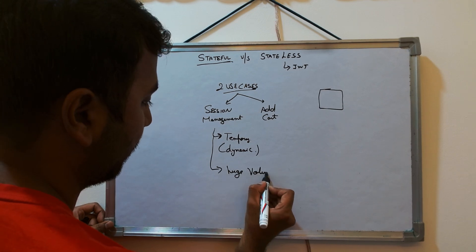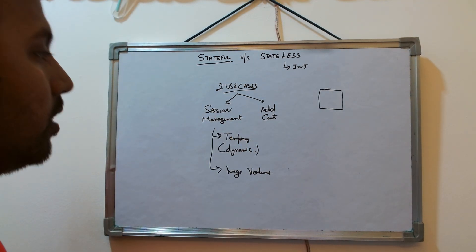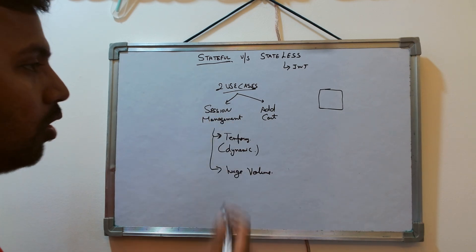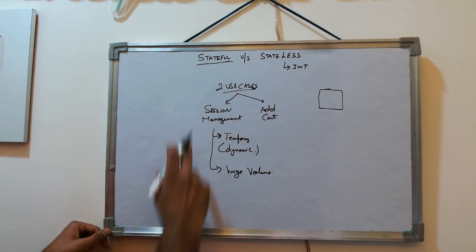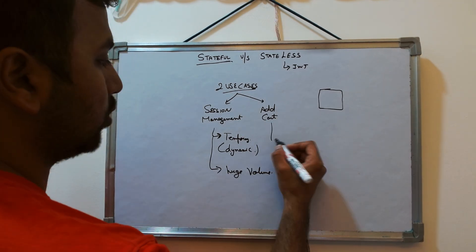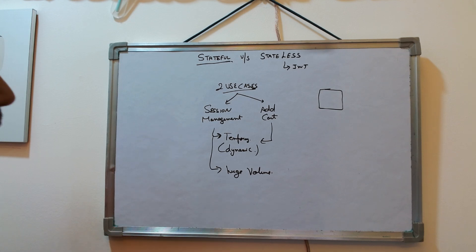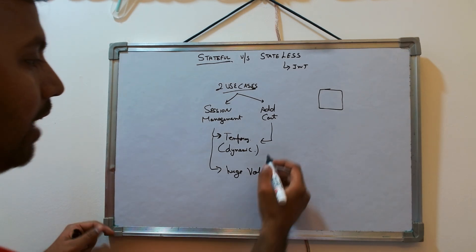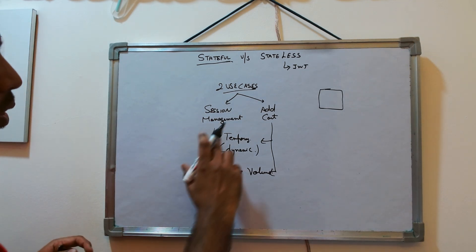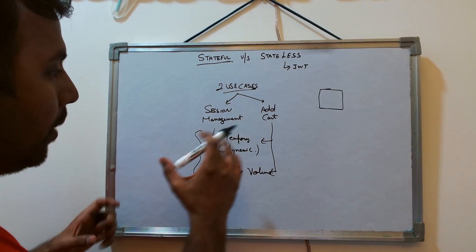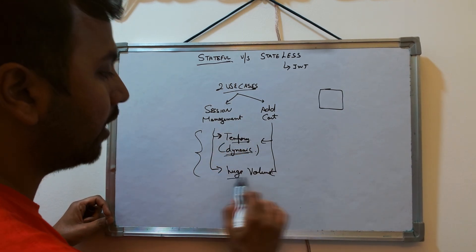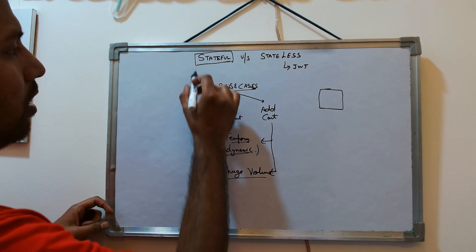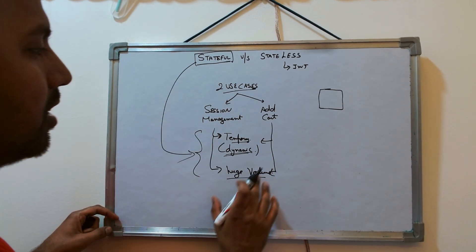Huge volume. The session, as your number increases, the session also gets increased. Even for one user there can be possible that multiple sessions is present. And here with the same cart also it is temporary and it's dynamic - adding, removing, adding, removing. Huge volume. So if you understand this common thing between very dynamic, temporary, and huge volume, that's where earlier stateful seems like yes, stateful architecture is good for such use cases.